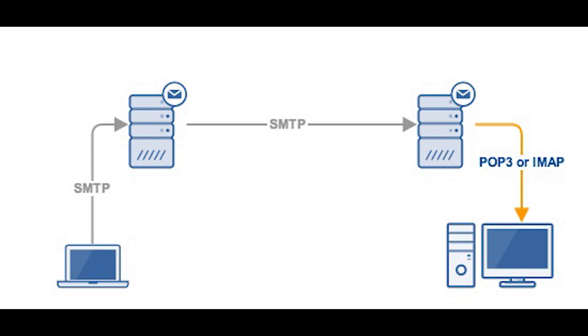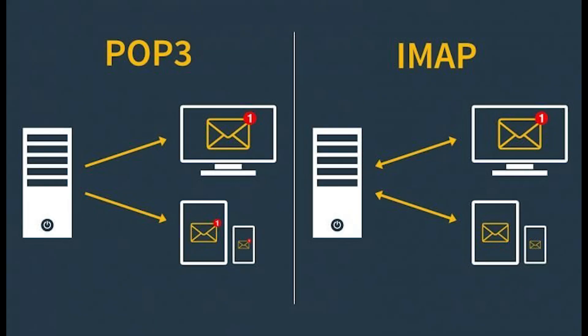POP v3 and IMAP v4 are the current standard and the most popular. When using POP, the email client first connects to the email server. Once it's successfully connected, it grabs all the mail from the server. It then stores the mail locally on your device. POP will delete mail from the server by default; however, you could set it up to leave copies on the server.